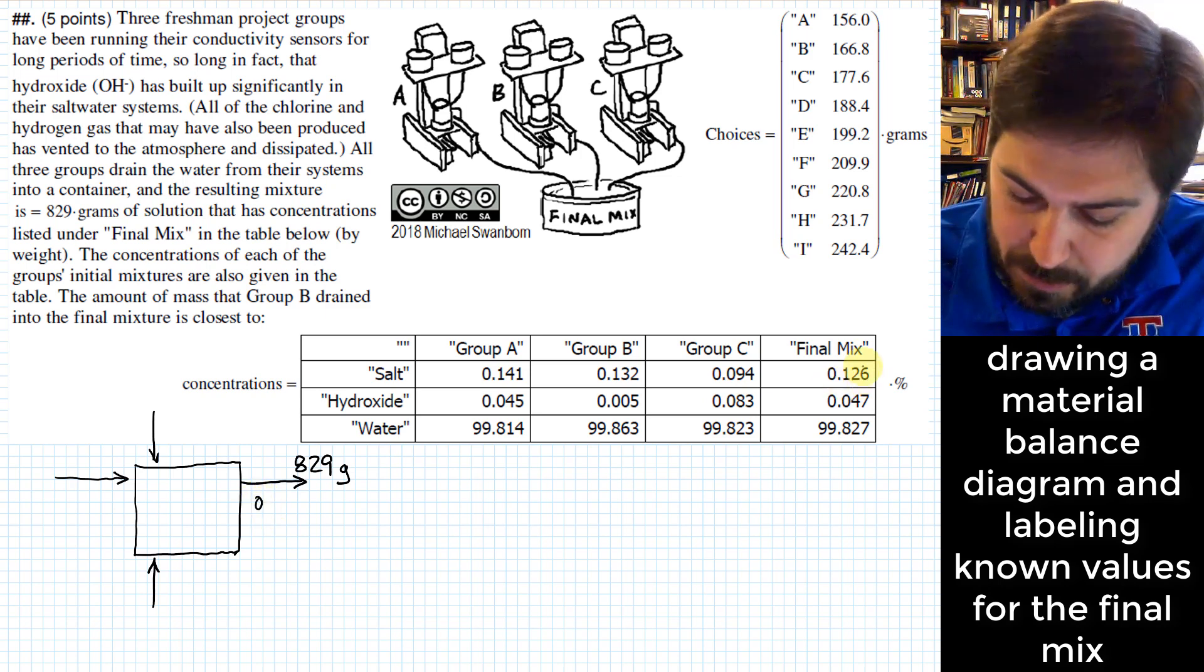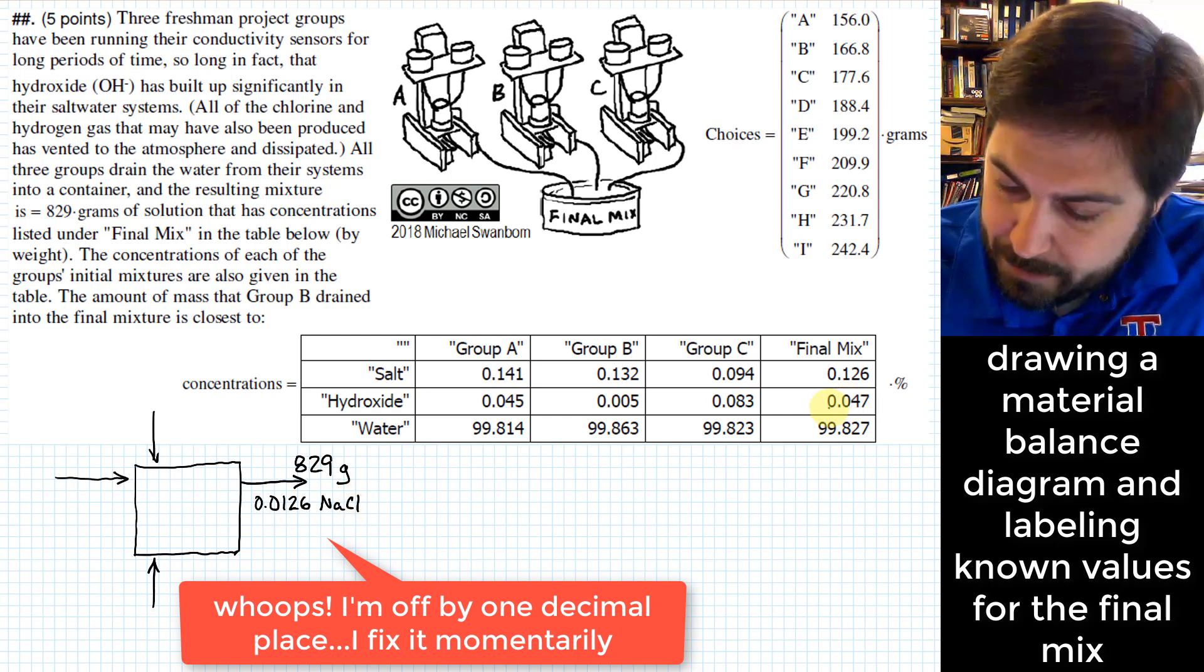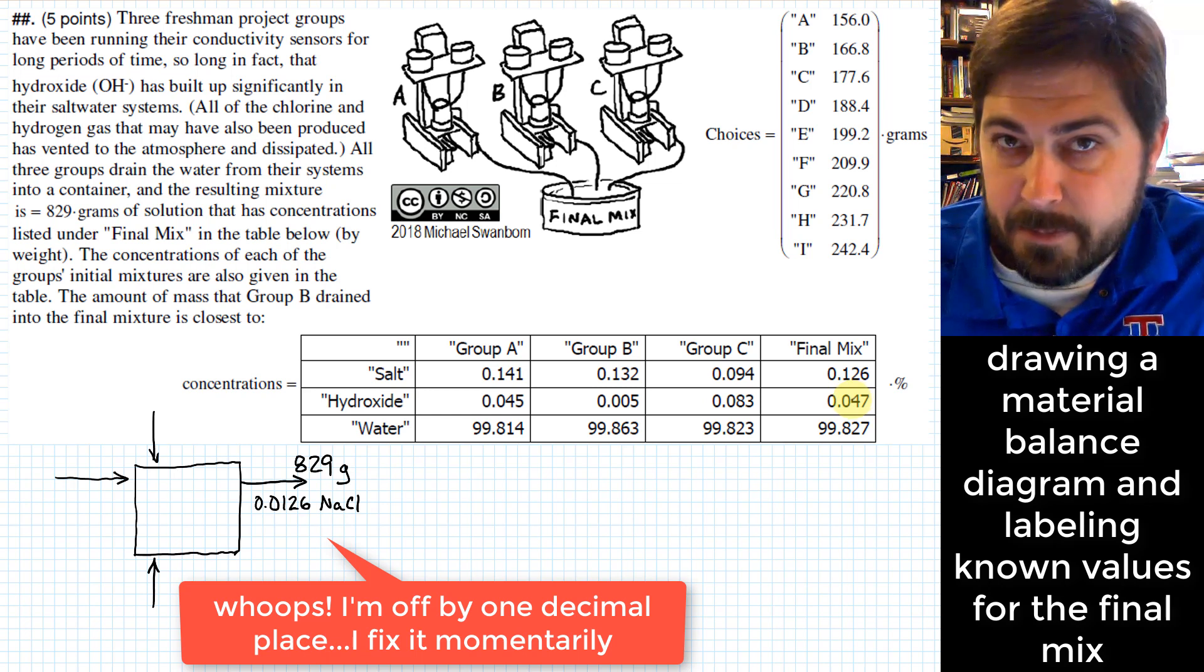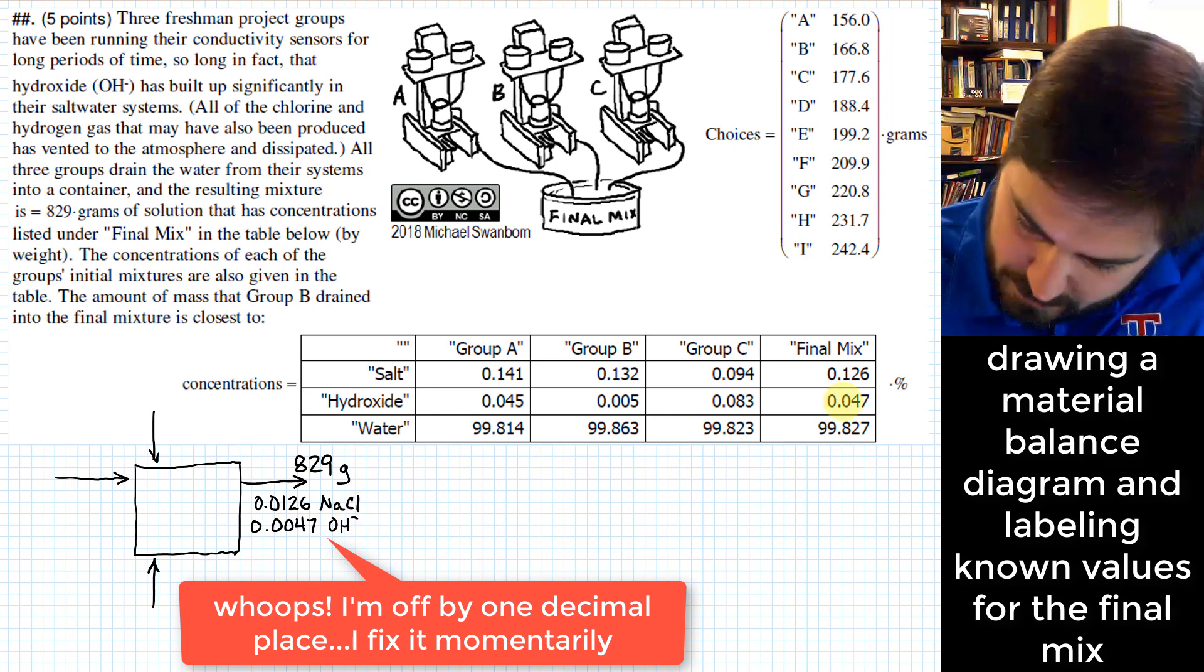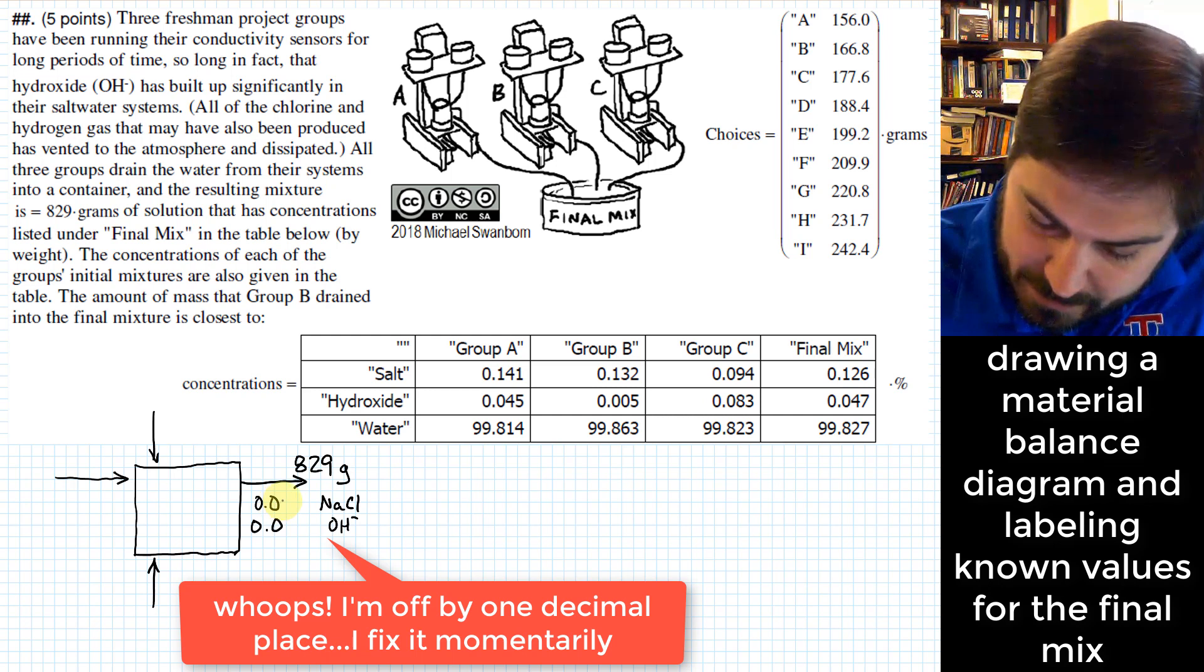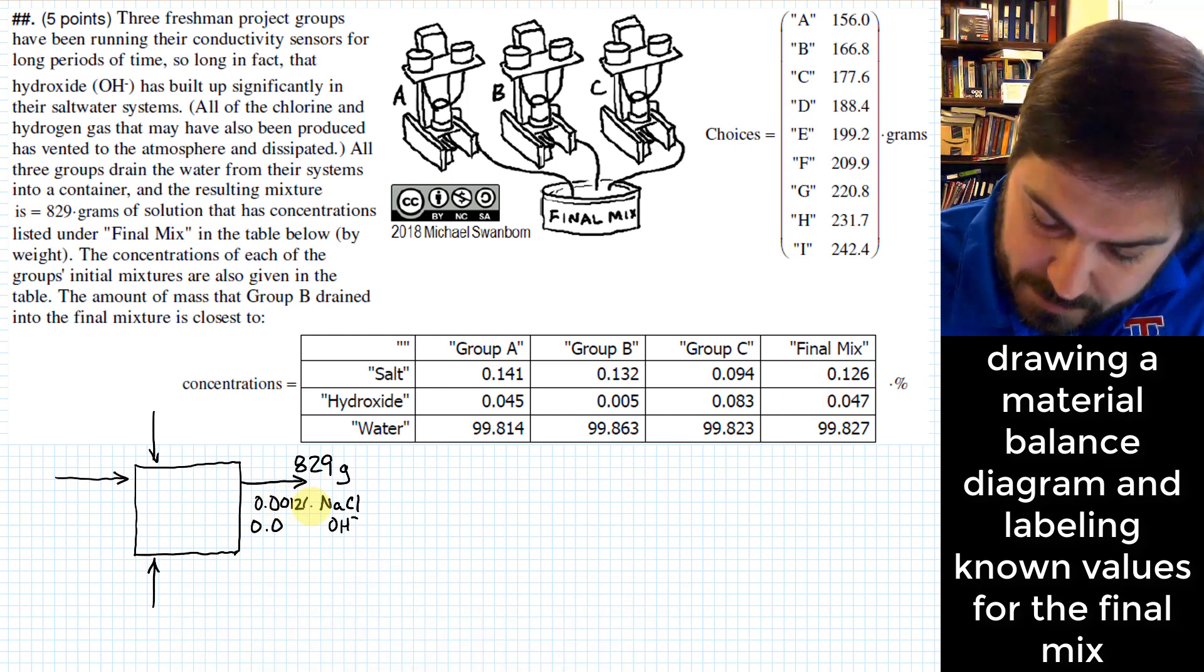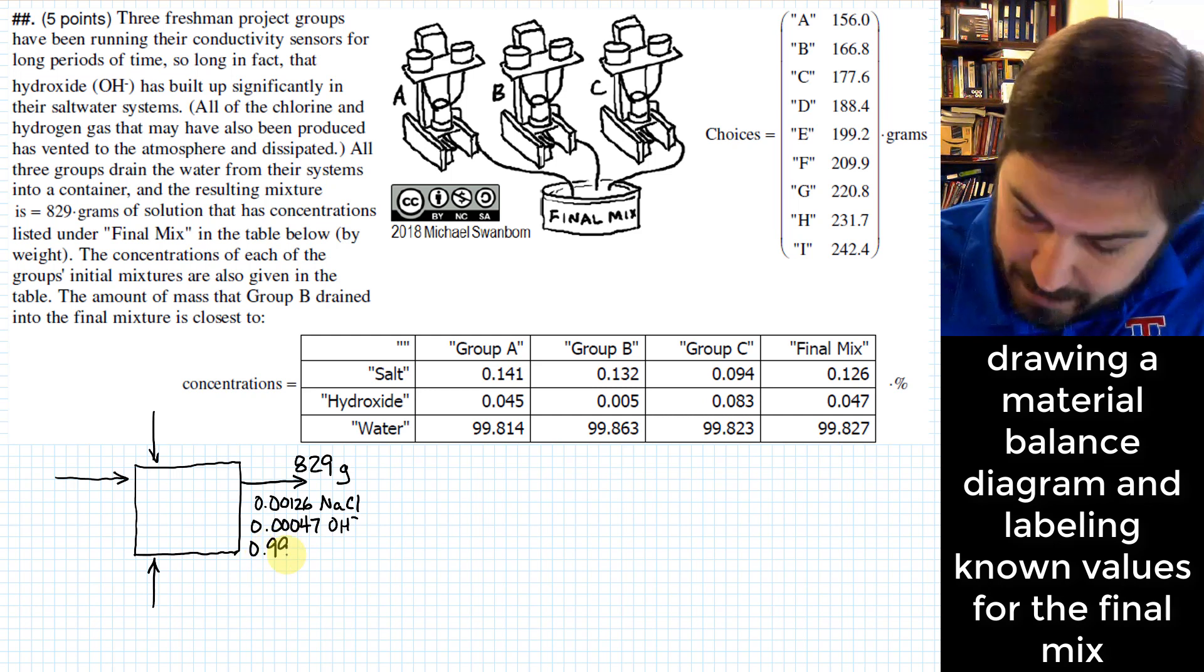We may as well, while we're in the middle of identifying that, identify the percentages of each component in the system right there. So we have 0.126%, I'm going to write these instead of percents, I'm going to write them as decimals. So I'll do 0.0126 salt. I'm going to write that amount of hydroxide there, that percentage, instead of a percentage, I'm going to write it as a decimal. So 0.0047 OH minus. Actually, I've got to be careful here, I think I did these first two off by one decimal, right? So this is 0.1%, so I need to do 0.00126. Here I want to do 0.00047.